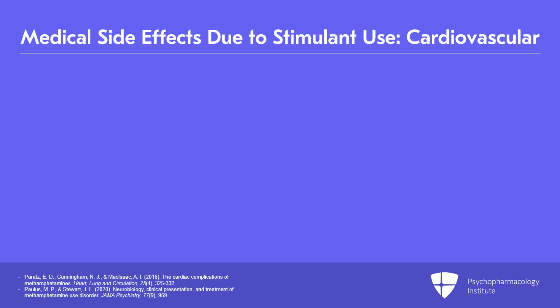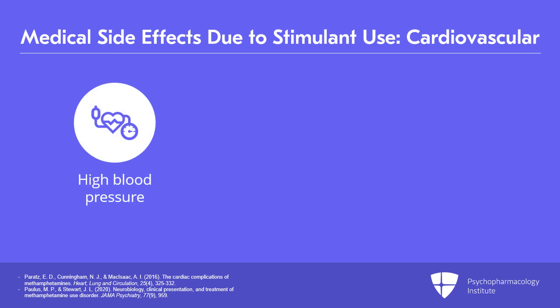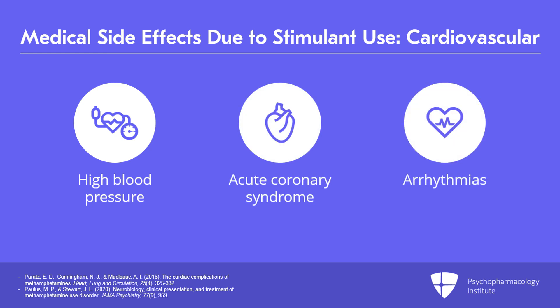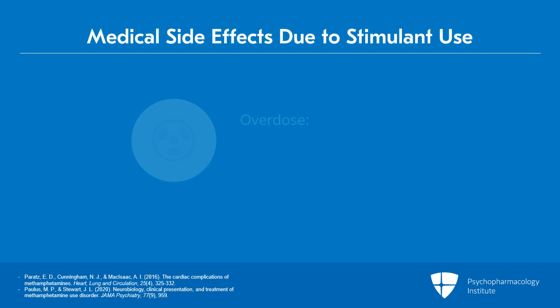Because stimulants also block the reuptake of norepinephrine — the main compound stimulating the sympathetic nervous system both in the brain and periphery — high blood pressure, occlusion of coronary arteries, and cardiac arrhythmias can happen. Overdose can also occur, often in combination with other substances. Basically what happens in overdose is that the brain and cardiovascular system go on overdrive, and people die of cardiovascular collapse from too much stimulant.